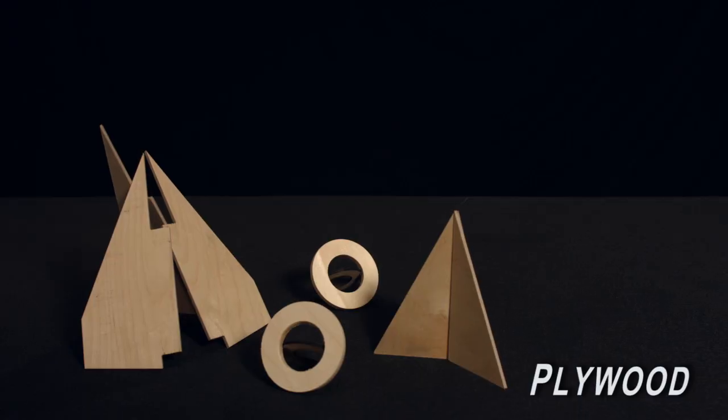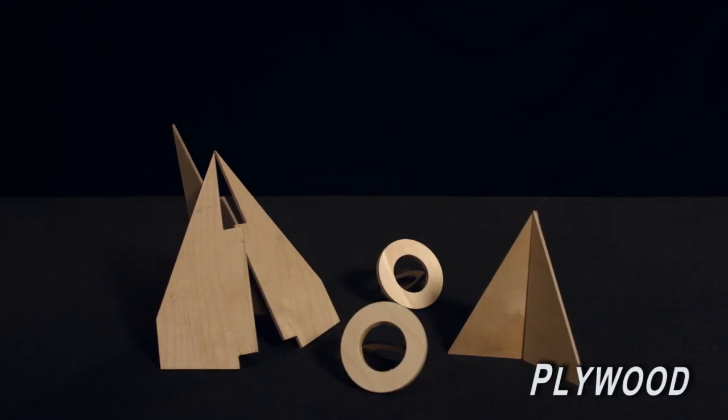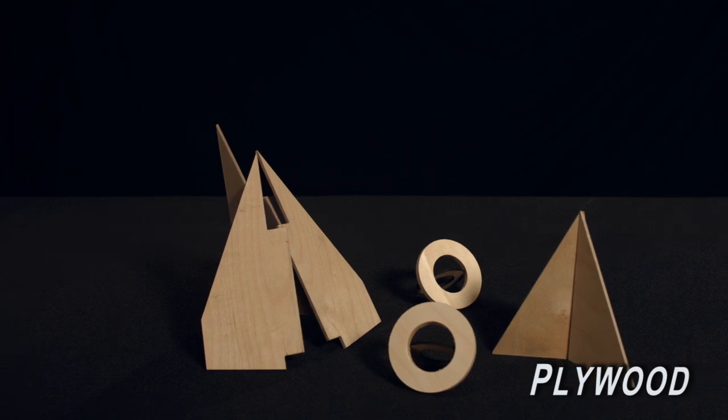Plywood is made of several layers of wood bonded together to make several plies. In rocketry, plywood is used mainly for the centering rings, bulkheads, and fins.